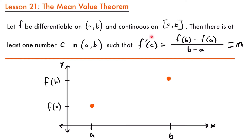So let's take a look at what the mean value theorem really says. It's nice to have a definition, but it doesn't do us any good unless we truly understand what it means in a scenario. If you look at this graph, we have point a and point b, each at different heights — our value of a on the function and our value of b on the function. What the mean value theorem says is if we connect a line between these two points, somewhere along that line there's going to be a point that has the same slope as the slope between the two points.